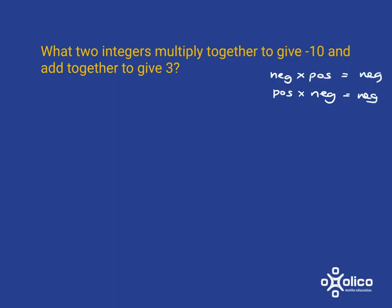We're going to write down all the options. It could be negative 1 times 10, or 1 times negative 10. Then negative 2 times 5, or 2 times negative 5. Can't be 3, can't be 4, and at 5 we're back where we started. Now let's check which pairs add to give 3: negative 1 plus 10 is 9, 1 plus negative 10 is negative 9, negative 2 plus 5 is 3, and 2 plus negative 5 is negative 3. So our two numbers are negative 2 and 5.